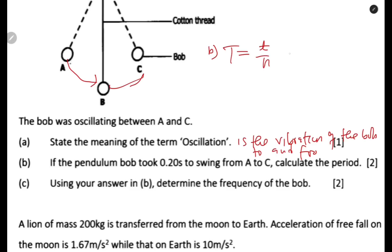The time taken is 0.2 seconds and the number of oscillations is 0.5. Note that period is written as capital T, not P. So: T = 0.2 / 0.5 = 0.4 seconds. Always include the unit. State the formula, substitute the values, and give the final answer.